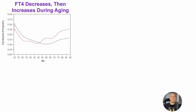Starting with the data for free T4, as we'll see in this plot, it decreases and then increases during aging. On the y-axis we've got free thyroxin (T4) in picomolar, and on the x-axis age ranges from 20 to 90 years. Later in the video we'll go deeper into age-related changes in centenarians. This study includes 83,000-plus people — if anyone has come across larger studies, please post in the comments.